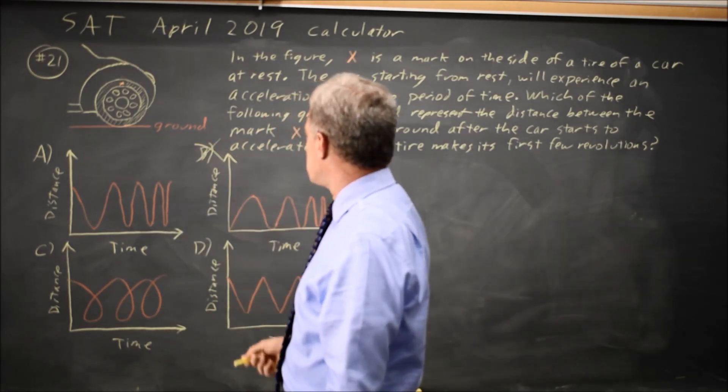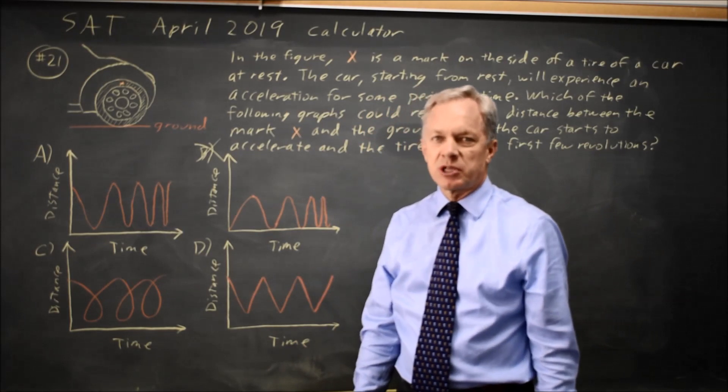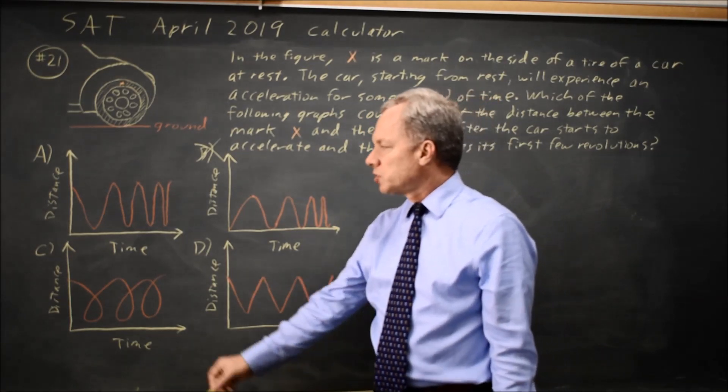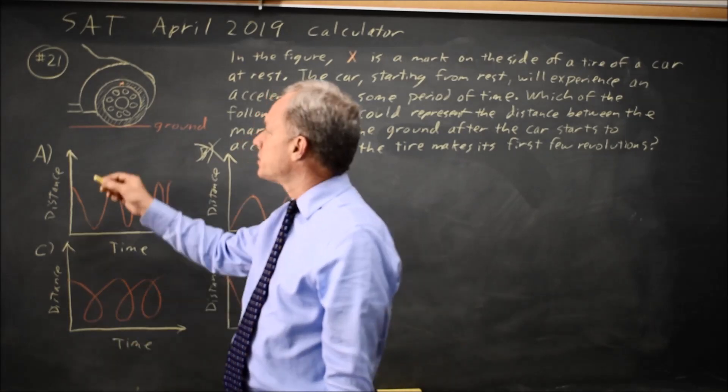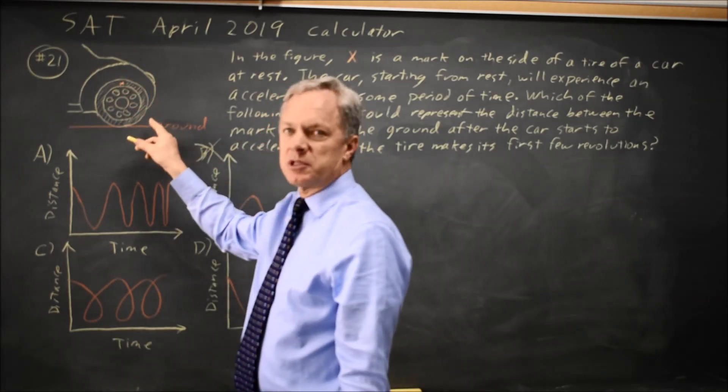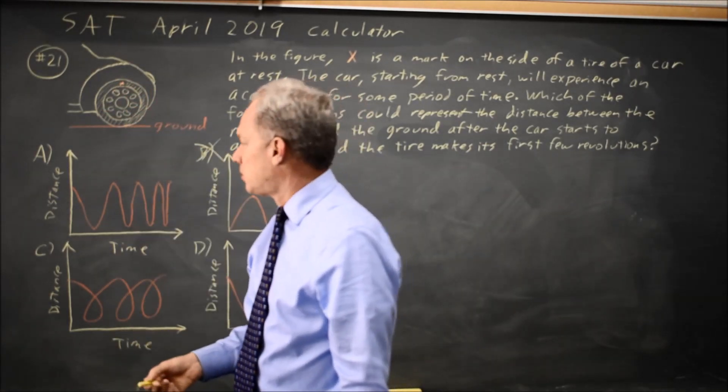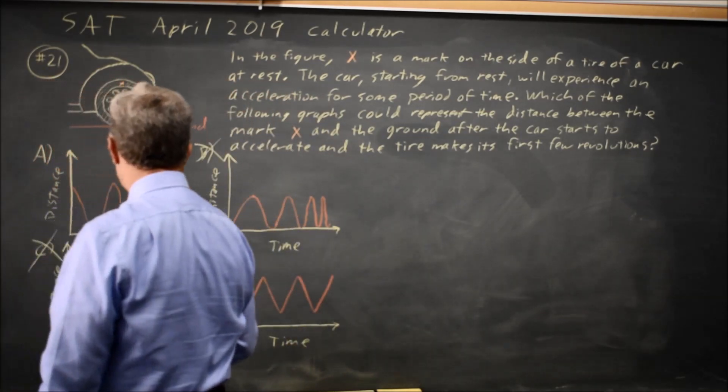So choice B, where the mark touches the ground, would not be correct. Choice C shows the mark going forward and backward, but as the car accelerates, the tire is always moving forward and the mark will also always move forward, so choice C is not correct.